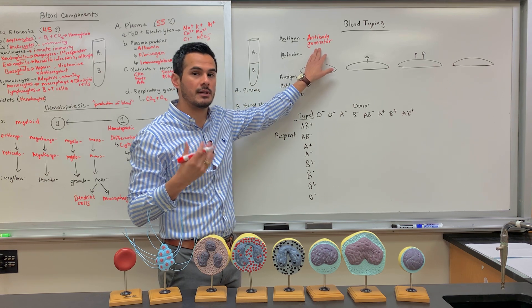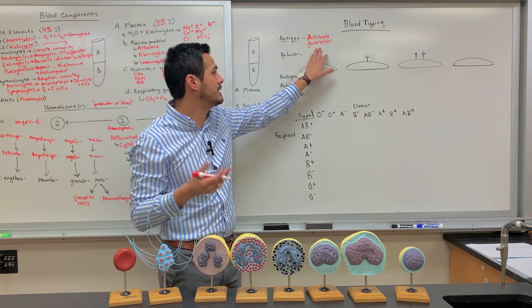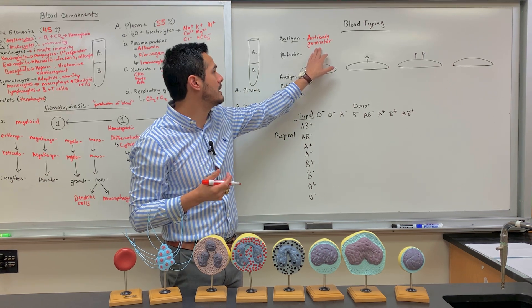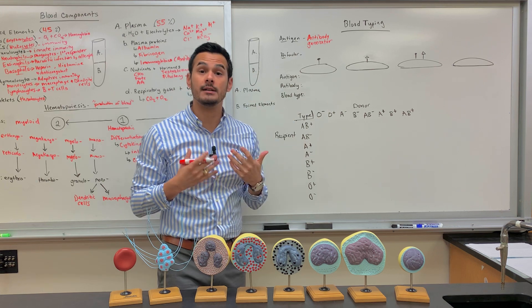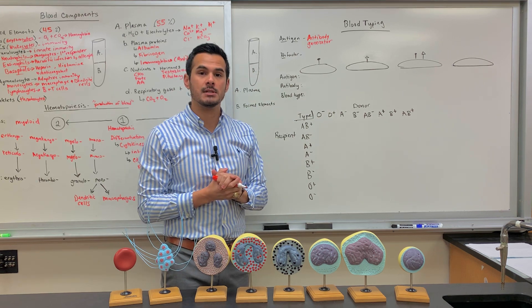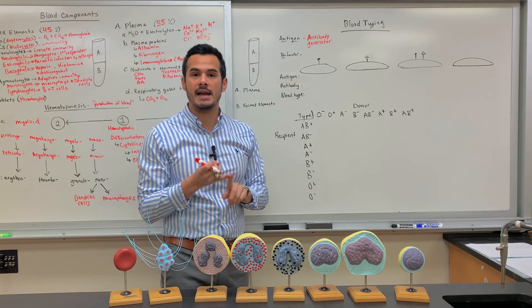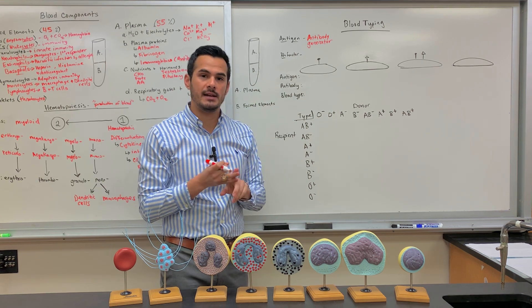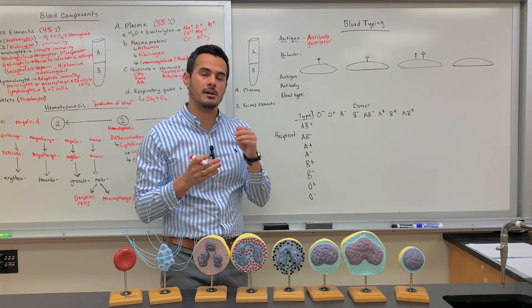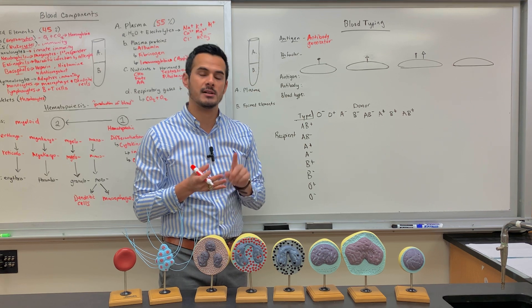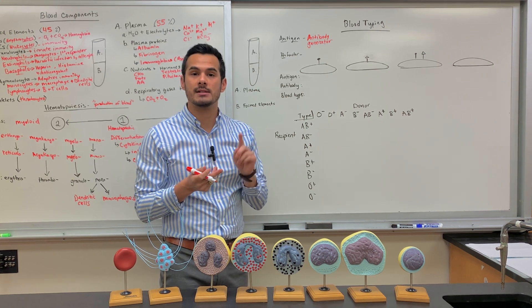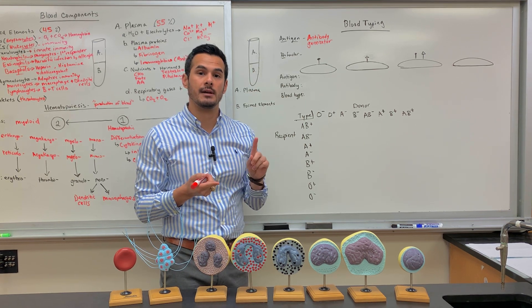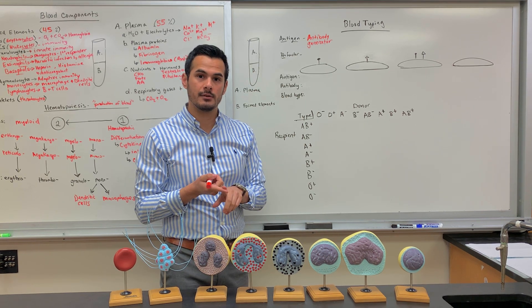This is why we call it an antibody generator. There are eight different blood types: you can be A positive, A negative, B positive, B negative, AB positive, AB negative, as well as O positive and O negative.